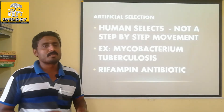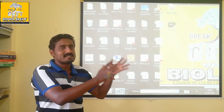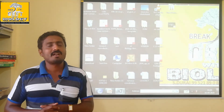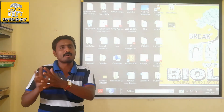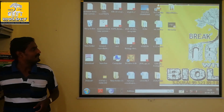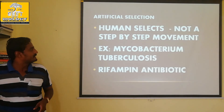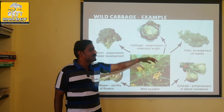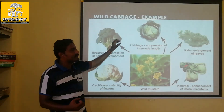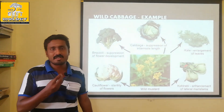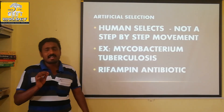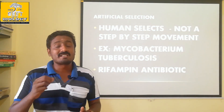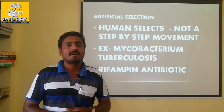So in artificial selection, I will explain: in natural selection, nature selects the stronger one. In artificial selection, human beings are selecting the stronger one — either positively or negatively. A positive example is cauliflower varieties developed through artificial selection and experiments. A negative example is the increase of resistant varieties of Mycobacterium tuberculosis. Both are due to artificial selection.